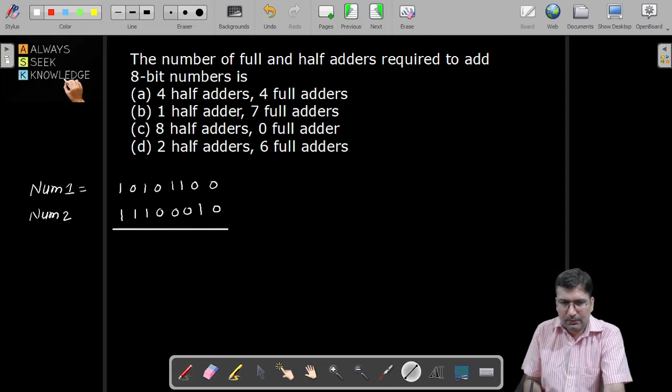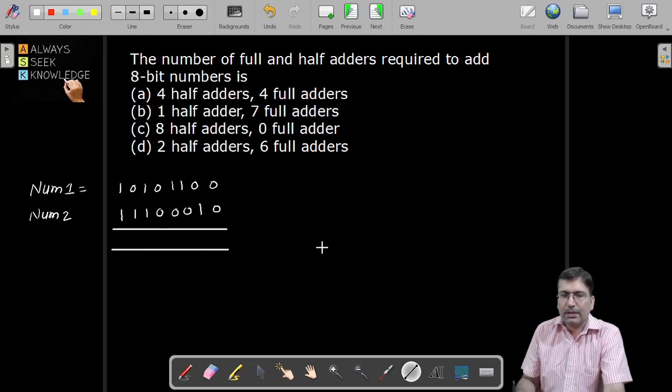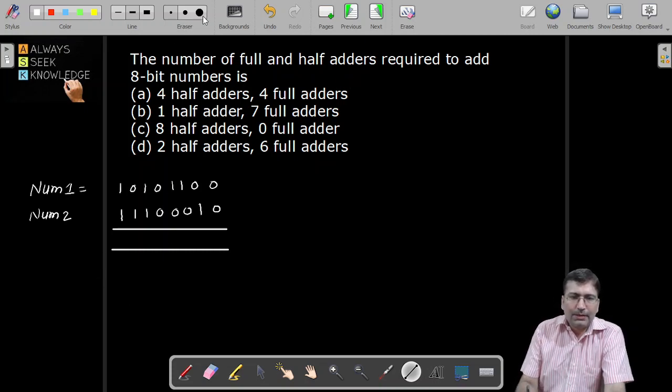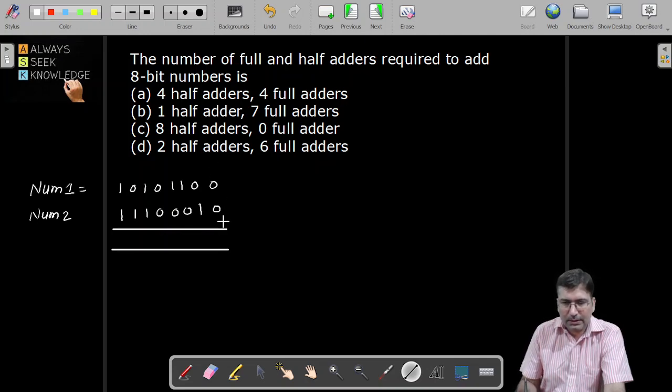If we want to add these two numbers, then the question is asking how many full or half adders will be required. So in an easy way, if we consider there are two numbers having individual bits, to handle each bit we can use one full adder.